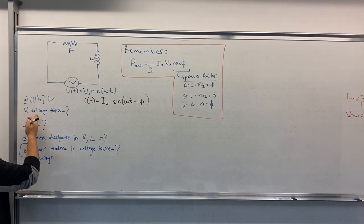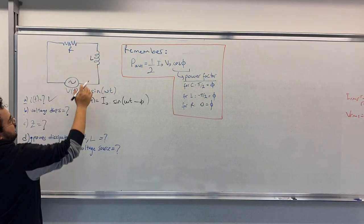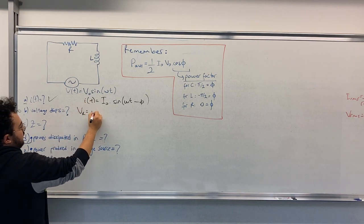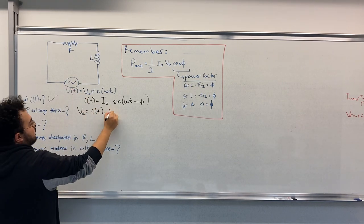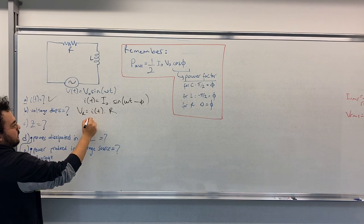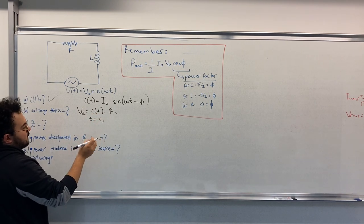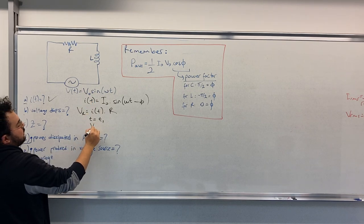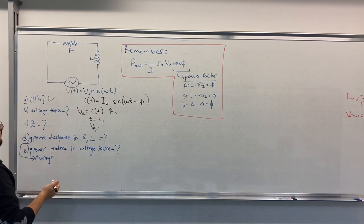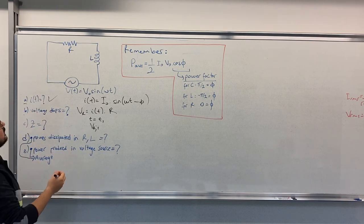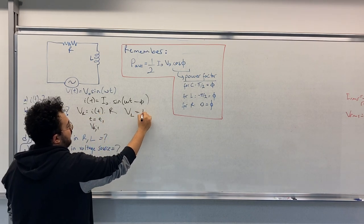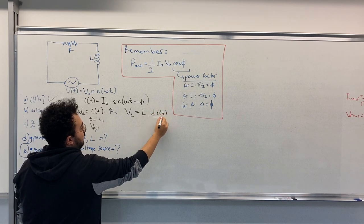The next question is what are the voltage drops across R and L individually. For R it is simple, it is just VR equals I0 times R. This is the voltage drop across the resistance for that moment. For the voltage drop across the inductance, we have VL equals L times dI(T)/dT.